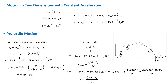We will now consider projectile motion, which is a special case of two-dimensional motion. Projectile motion is the motion of an object thrown or projected into the air at some angle with respect to the surface of the Earth, such as a baseball thrown into the air or an object dropped from an airplane.